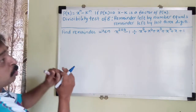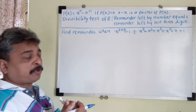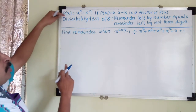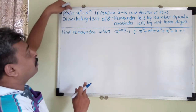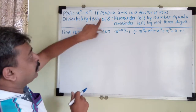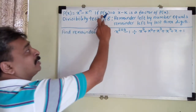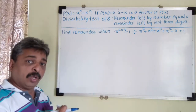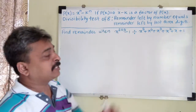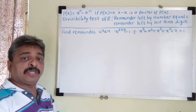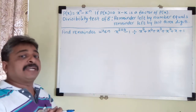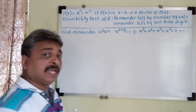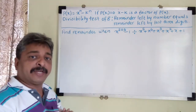The tools we will use to solve this problem are: first, the factor theorem — if p(x) equals x raised to n minus k raised to n, and if I put x equal to k and get p(k) equal to 0, then x minus k is a factor of p(x). The second important tool is the divisibility test of 8.